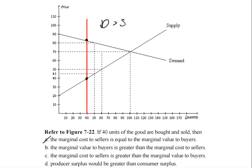Answer B: the marginal value to buyers is greater than the cost to sellers. This is true. Simply by looking at the graph, the demand exceeds the supply. In this case, we're talking about the prices, so the value to buyers is greater than the marginal cost to sellers. So B is the answer.